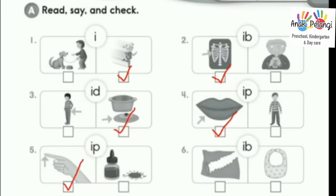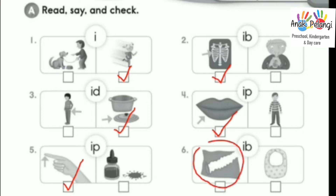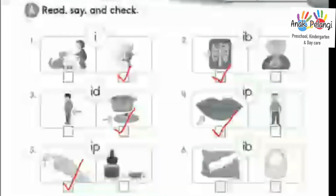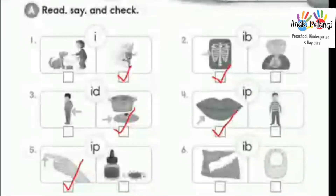Number six. Id. Which picture has sound Id? Rip. Bib. Bib has sound Id. Give a check.